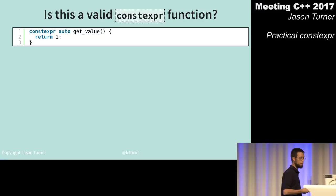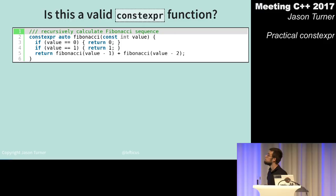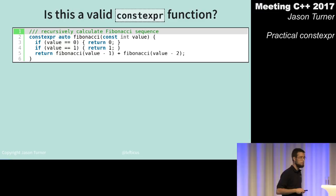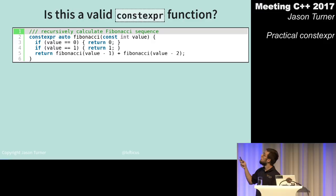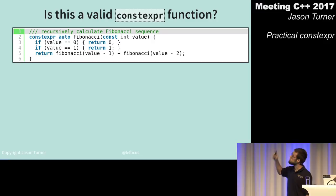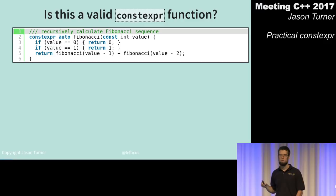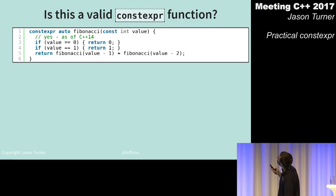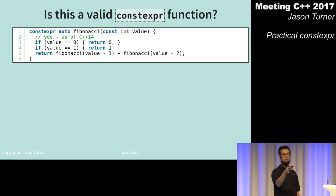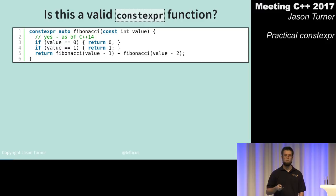We have a recursive implementation of the Fibonacci sequence — everyone's favorite way to test efficiency. Is this a valid constexpr function? As of C++14, multiple code paths are effectively allowed, and C++14 allows pretty much anything.